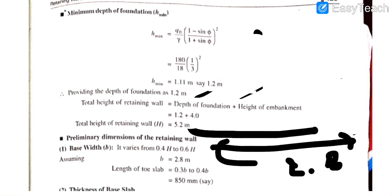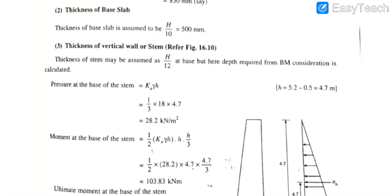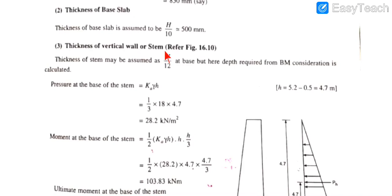Now, the thickness of the base slab is assumed as H/10, which gives 500 mm. The thickness of the vertical wall or stem is also calculated next.